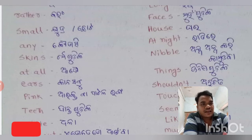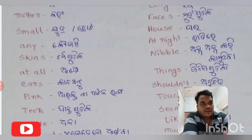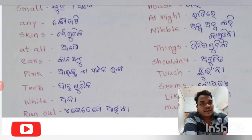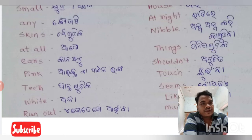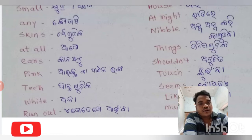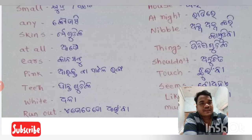'Things' means objects — anything in our daily life we call things. 'Ears' — E-A-R-S — a human being has two ears. 'Shouldn't' — S-H-O-U-L-D-N-T — means something negative or not possible. 'Pink' — P-I-N-K — is a type of color. 'Touch' — T-O-U-C-H — means to touch something. 'Teeth' — our teeth.